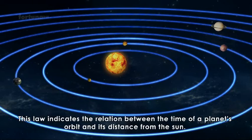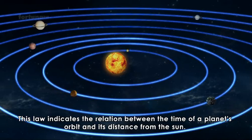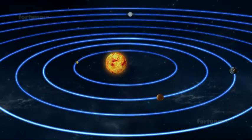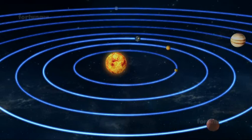This law indicates the relation between the time of a planet's orbit and its distance from the sun. Using this relationship, if we know the duration of a planet's orbit around the sun, we can find out its average distance from the sun.